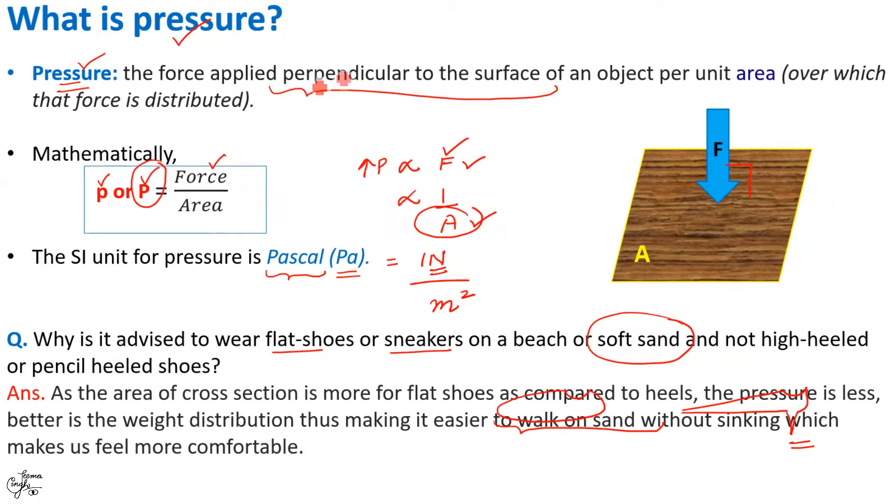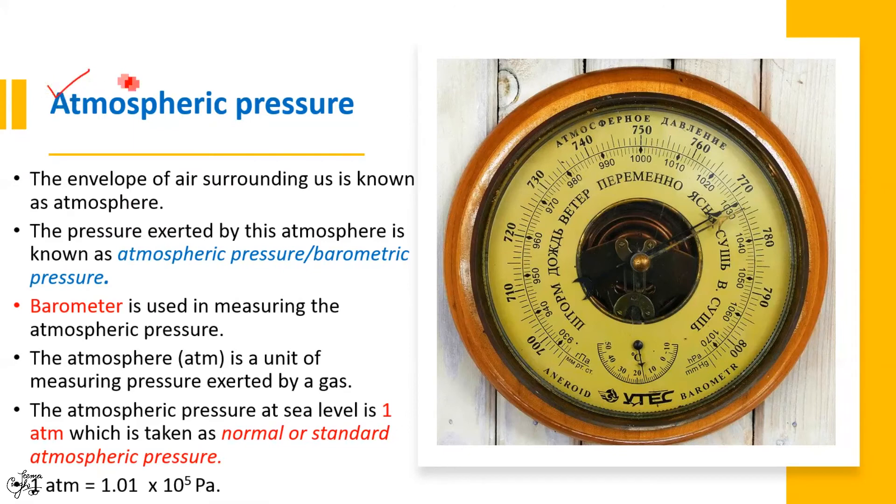Dear learners, there are different types of pressures about which you will learn in your higher classes. But the one which you need to know at your present class level is the atmospheric pressure, which is very crucial or vital for sustenance of life. What is atmosphere? The envelope of air surrounding us is known as atmosphere. And the pressure exerted by this atmosphere is known as atmospheric pressure or barometric pressure.